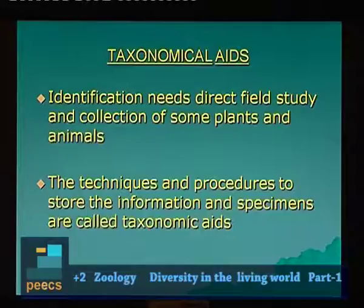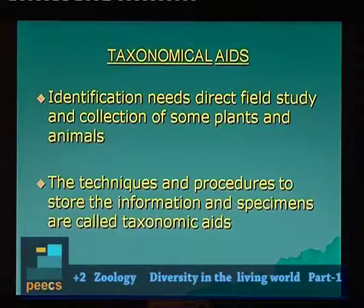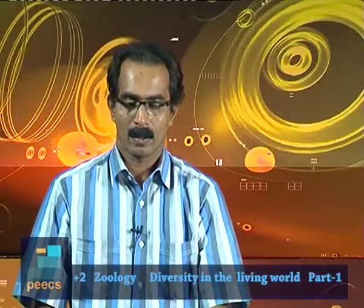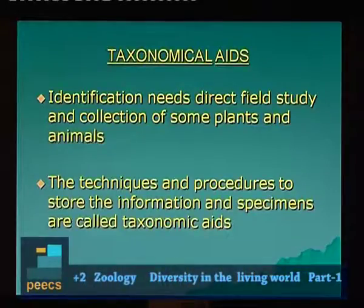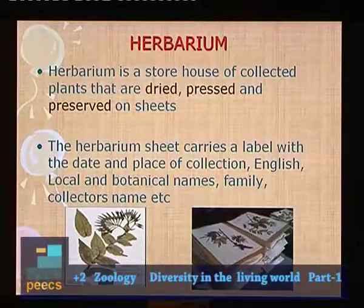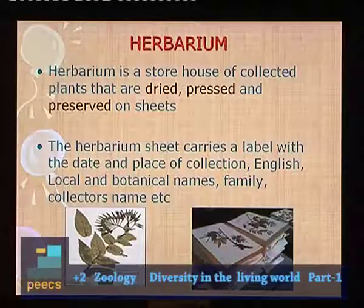Taxonomical aids are techniques and procedures used for taxonomic study and storing collected information. For identification, we first go into the field to collect plants and animals, bring them back to the laboratory and identify them. The first taxonomical aid is herbarium — a storehouse of collected plants that are dried, pressed and preserved on sheets.